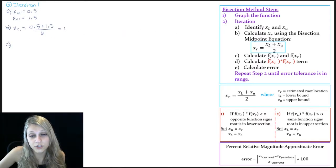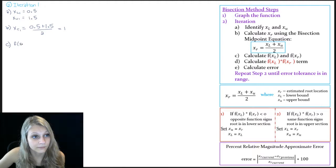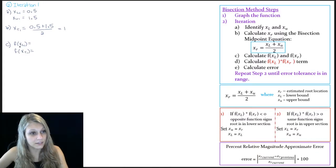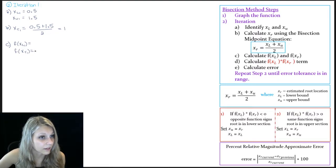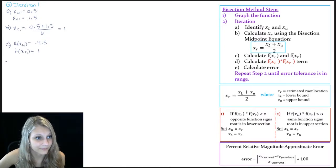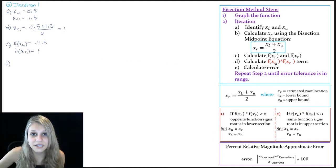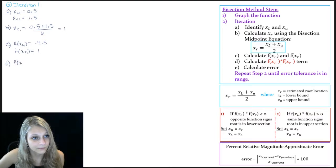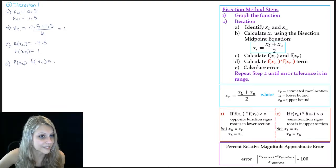Step C is to calculate the function value at our lower bound and our root estimate. After substituting these values into our function, I get negative 4.5 and 1. Step D is to multiply these two terms together.